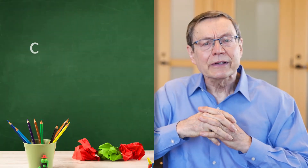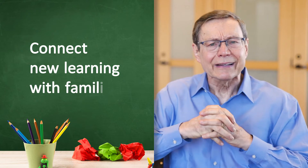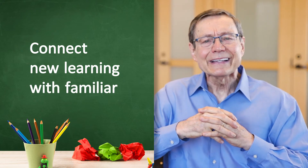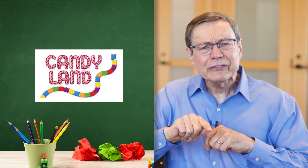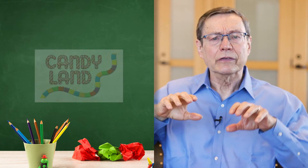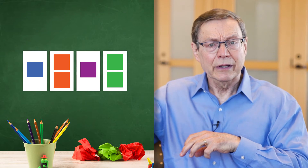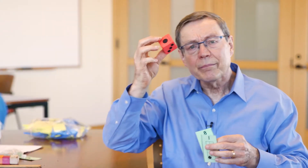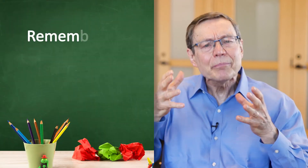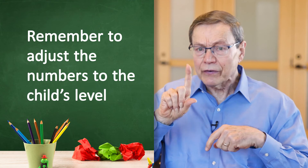It is also important to connect new learning with children's existing understanding and interest. For example, if children are already interested in and know how to play a board game such as Candyland, you can introduce new learning by switching the often provided drawing cards that show the next color to move forward to drawing cards that show a number. Small group activities provide good opportunities to tailor instruction to each child's developmental levels. Whether it's an altered Candyland or any other fun racing game, remember to adjust the numbers to the child's level.